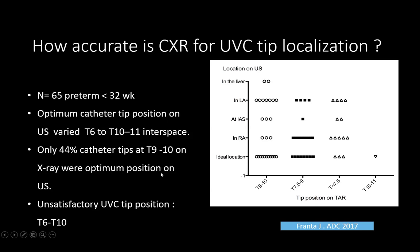In our study of 65 preterm infants below 32 weeks, optimum catheter tip position was defined as the UVC tip at the right atrium–IVC junction. These optimal tips varied in X-ray position from T6 to the T10–T11 interspace. Only about 44% of catheter tips located between T9 and T10 on X-ray were actually in the optimum position.